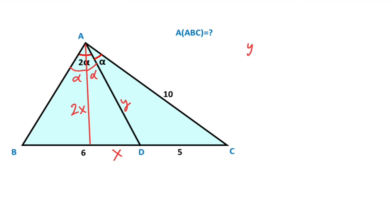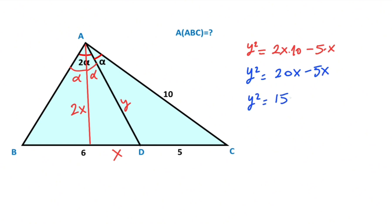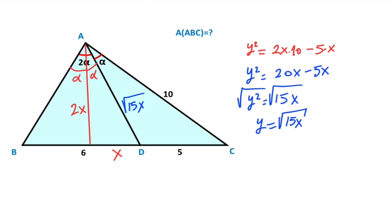We know that the square of the angle bisector length equals 2x times 10 minus 5 times x. Therefore y² = 20x − 5x² = 15x, which means y = √(15x).